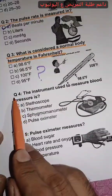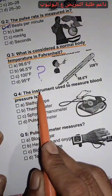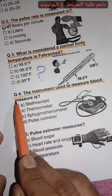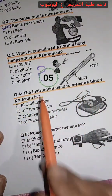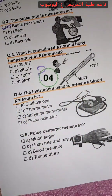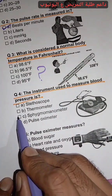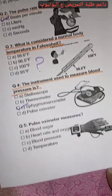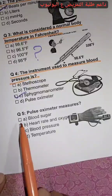Question 4. The instrument used to measure blood pressure is? Answer C: sphygmomanometer.